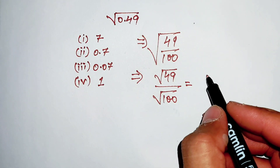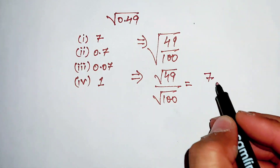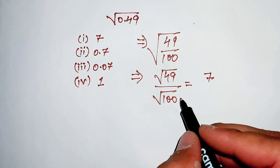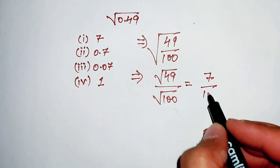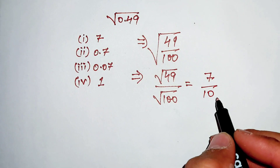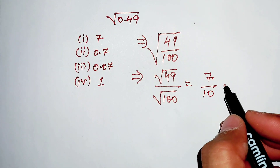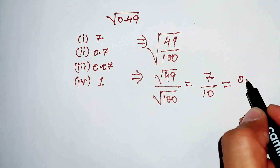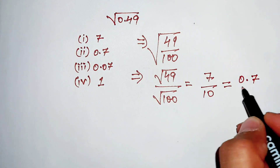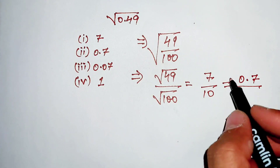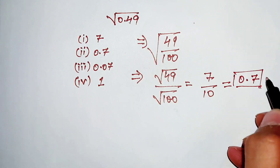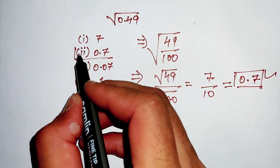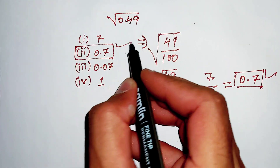Square root of 49 is 7, and square root of 100 is 10, so this is equal to 7/10 which is 0.7. That is our final answer — option 2 is correct.